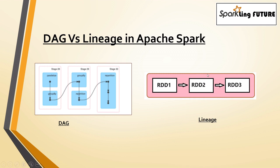Now, what is lineage? Lineage refers to the process of tracking the history of data transformations in Spark. It allows fault tolerance and RDD recovery by storing the information needed to recreate lost or corrupted RDDs.